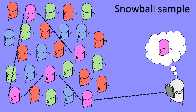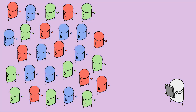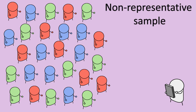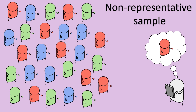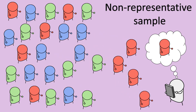A non-representative sample is, as the name suggests, a sample that is deliberately unrepresentative, and this may be for a specific reason. For example, if the researcher wants to speak only to people with a particular characteristic — such as the red characters — the sample is made up entirely of those people. This means the sample is unrepresentative, but for the purpose of the research, this is necessary.